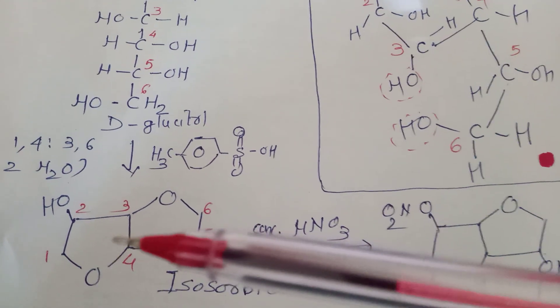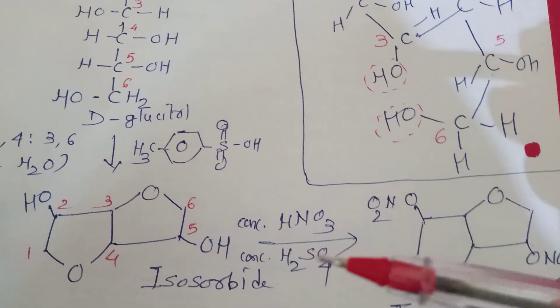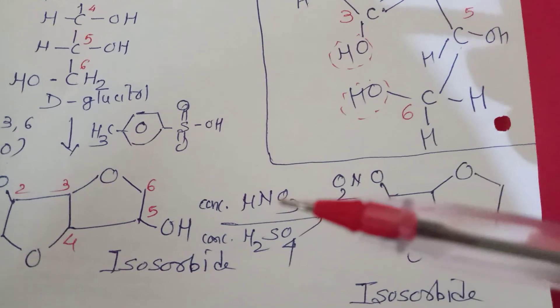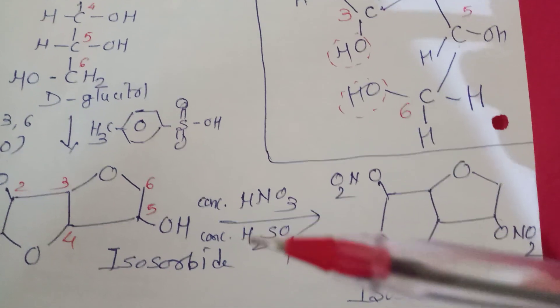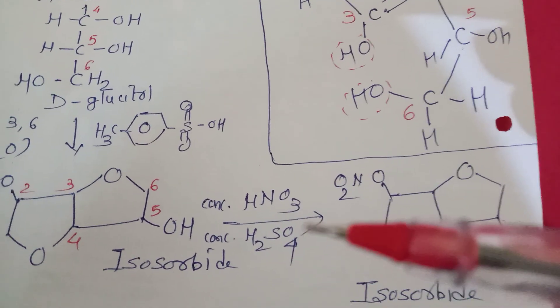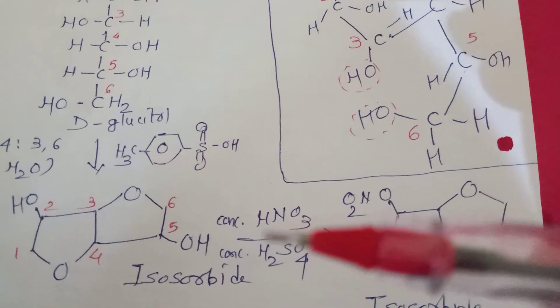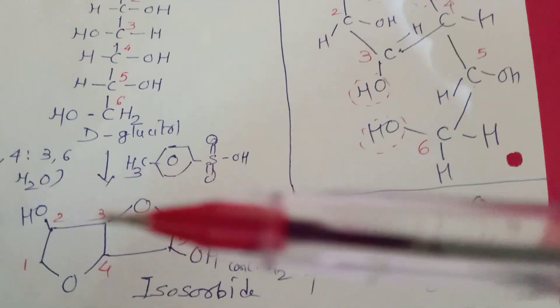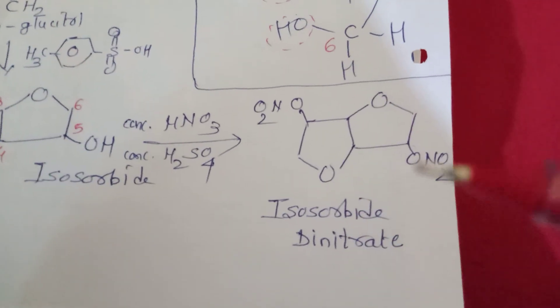When isosorbite reacts with nitrating acid, that is the mixture of concentrated nitric acid and sulfuric acid, it liberates the nitronium ion, which acts as an electrophile and will get attached on the oxygen of the hydroxy group to form isosorbite dinitrate.